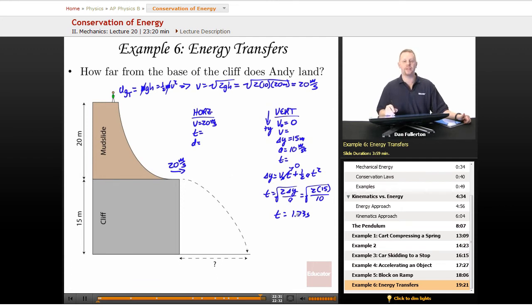And if he's in the air 1.73 seconds vertically, he must be in the air 1.73 seconds horizontally. So d or delta x is just going to be velocity times time. Delta x, which is d, will be vt. Or that's going to be 20 meters per second times our time of 1.73 seconds, giving him a displacement horizontally of about 34.6 meters. This distance right there must be 34.6 meters from the base of the cliff.